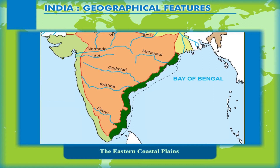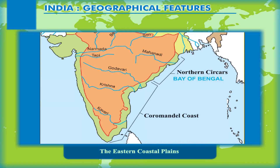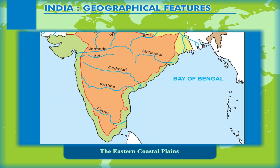The Eastern Coastal Plains extend from the mouth of the Ganga up to Kanyakumari along the Bay of Bengal. They are divided into two subdivisions: the northern part is known as the Northern Circars and the southern part is called the Coromandel Coast. The Eastern Coastal Plains are broader than the Western Coastal Plains, and at several places these plains have deltas formed by peninsular rivers like the Mahanadi, Godavari, Krishna, and Kaveri.